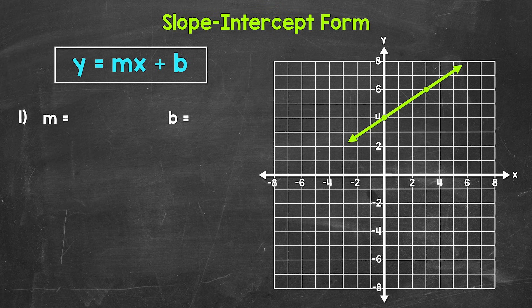Looking at number one, let's start by finding the y-intercept. Then we will find another point on the line and determine what the slope is. You can see the two points that we are going to use — they've already been marked. For the y-intercept, where does this line cross the y-axis? It looks like this line crosses the y-axis right here at four. So the coordinates are zero, four. So our y-intercept is four.